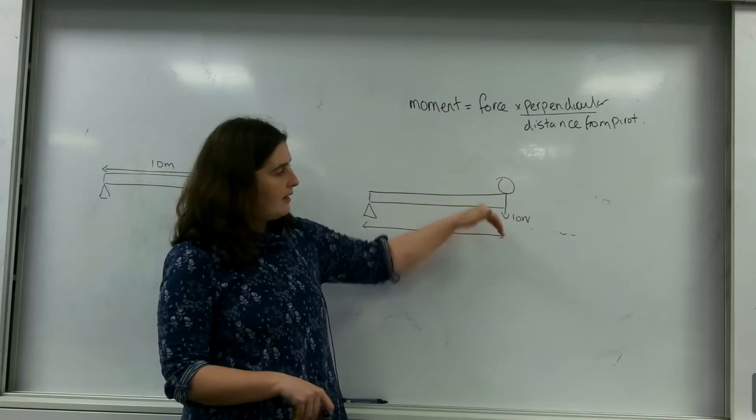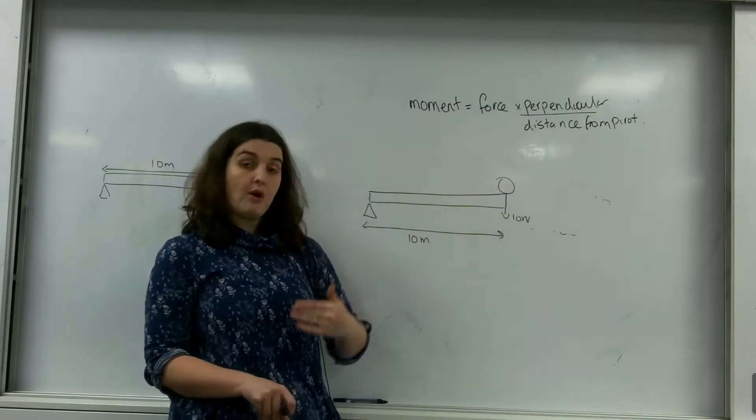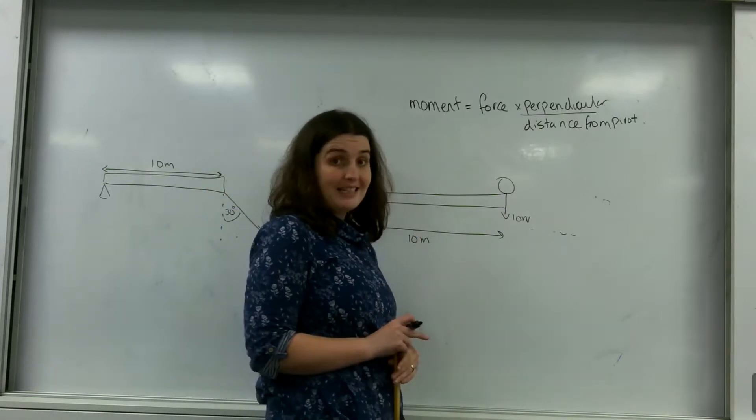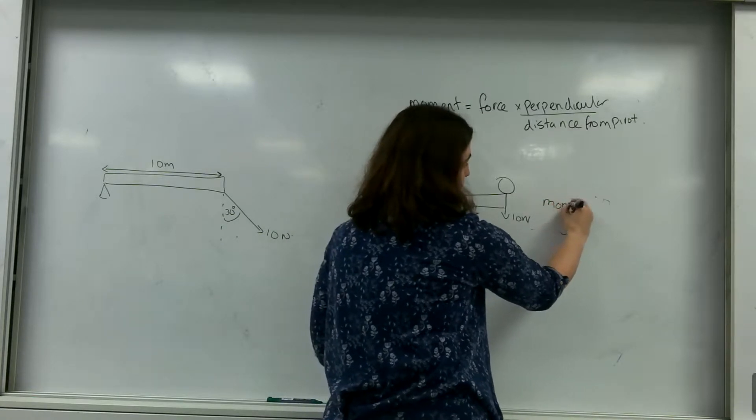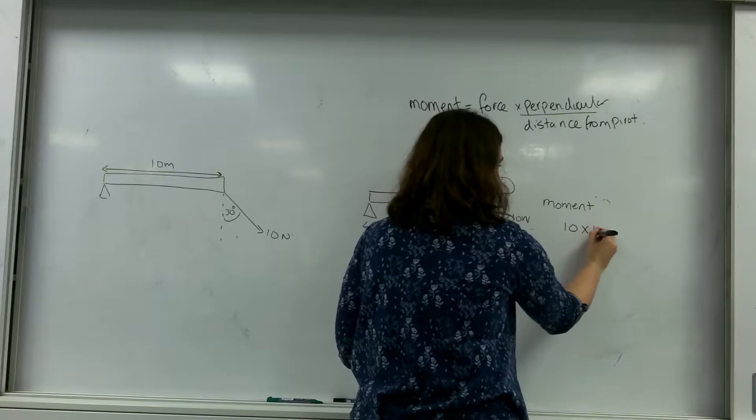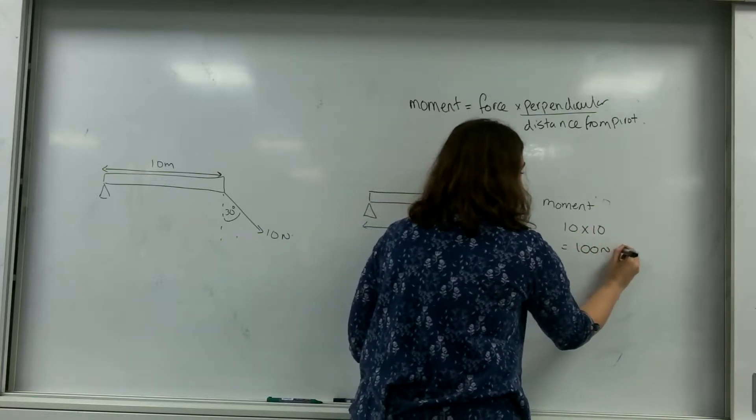And as you can see, my distance is this way, and my force is acting downwards. They're at right angles to each other. Which means that 10 is my perpendicular distance. So my moment is 10 times 10, which is 100 newton metres.